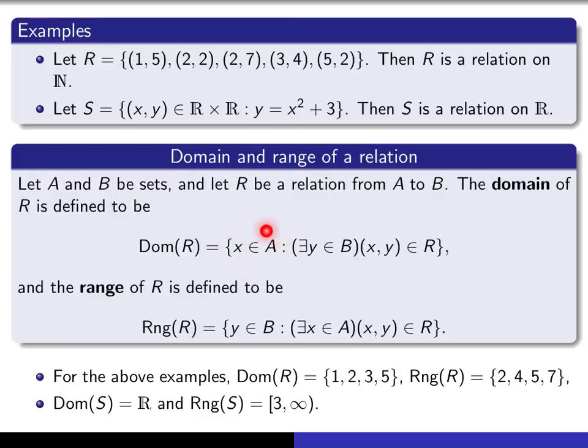It's the set of all x in the first set A such that there exists a y in B such that the ordered pair (x, y) lies in the relation.